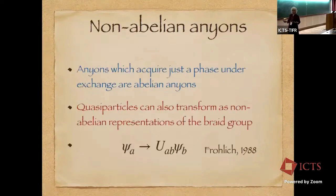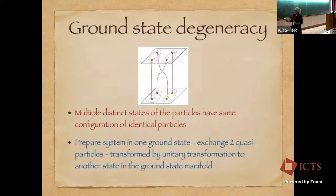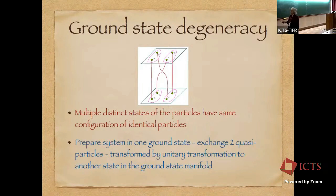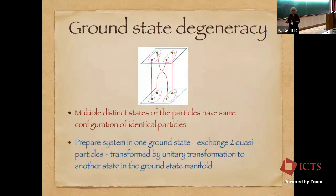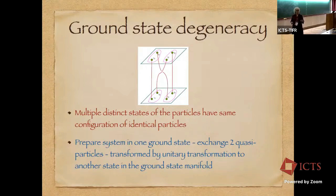These are just particles, quasi-particles, which have an exchange statistics of theta when you take one around the other. But what I want to discuss here are non-abelian anyons, which transform as non-abelian representations of the braid group. The most important point is that multiple distinct states of the particles have the same configuration of identical particles. If I prepare a system in one ground state, then apply a unitary transformation by braiding these non-abelian particles, I can go to another state of the system. This is the reason these particles are often relevant in quantum information, where the states are like qubits and the unitary representations are the gates that act on them.